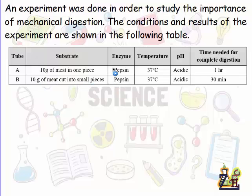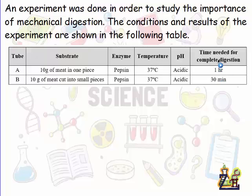The enzyme used is the same for both tubes. The temperature is 37 degrees Celsius and the pH is acidic in both tubes. The result shows that tube A needed one hour for complete digestion, while tube B needed only 30 minutes.